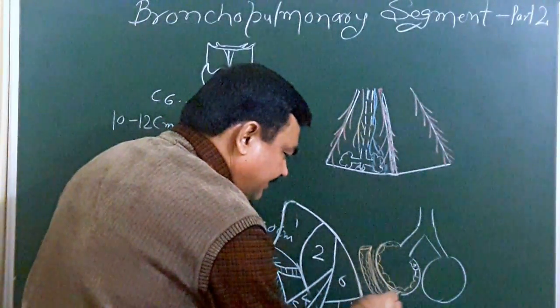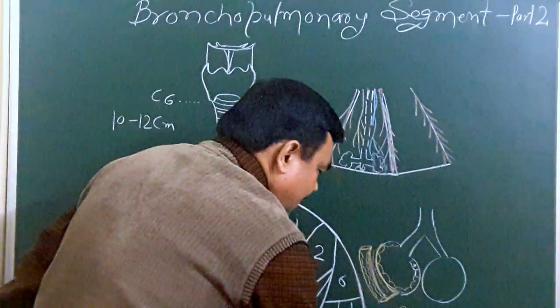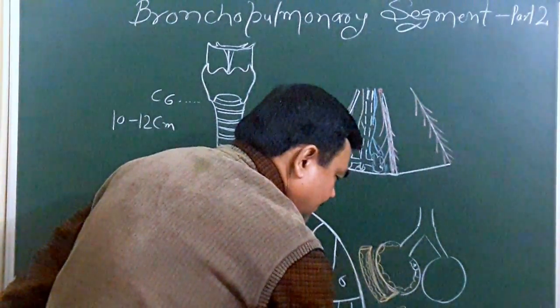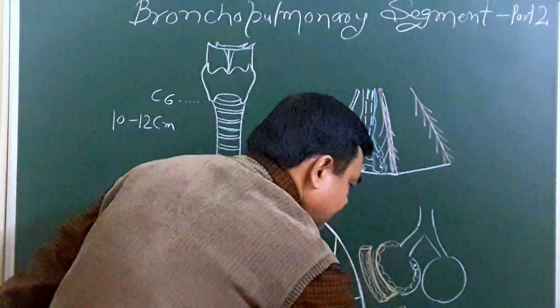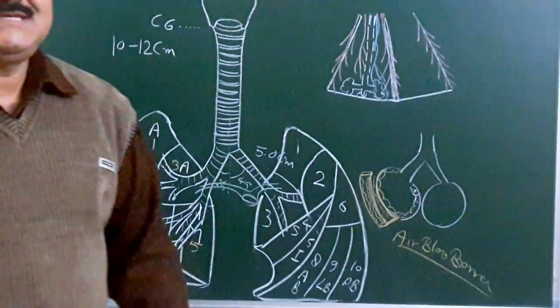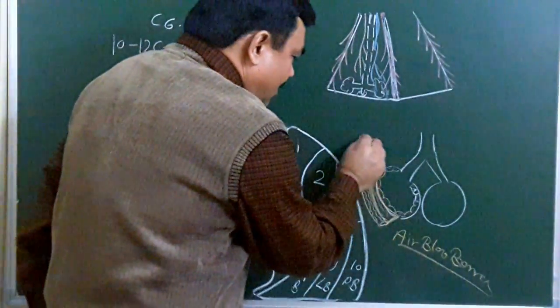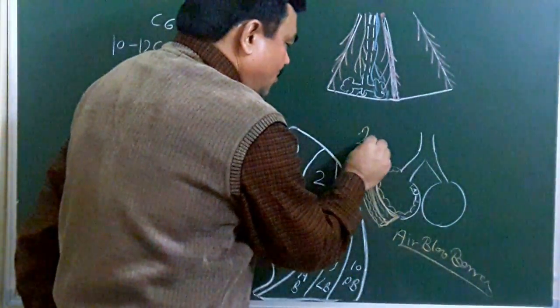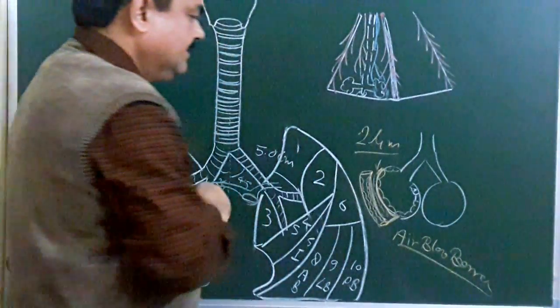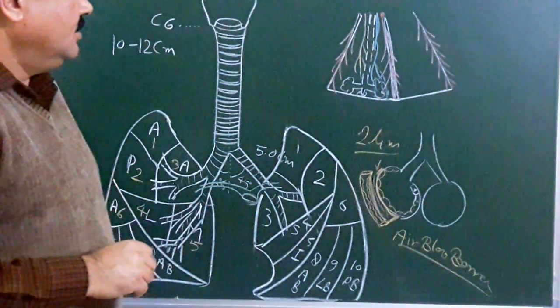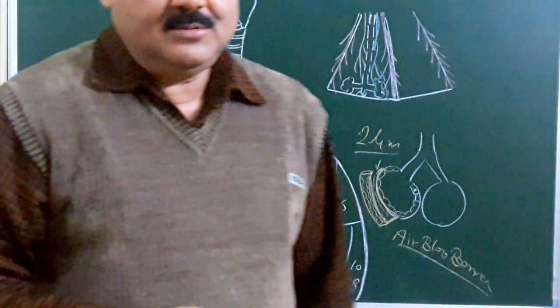This part forms the air-blood barrier, through which gaseous exchange takes place. The thickness is about 1.2 micrometers. So this is all about the bronchopulmonary segment part 2. Thank you.